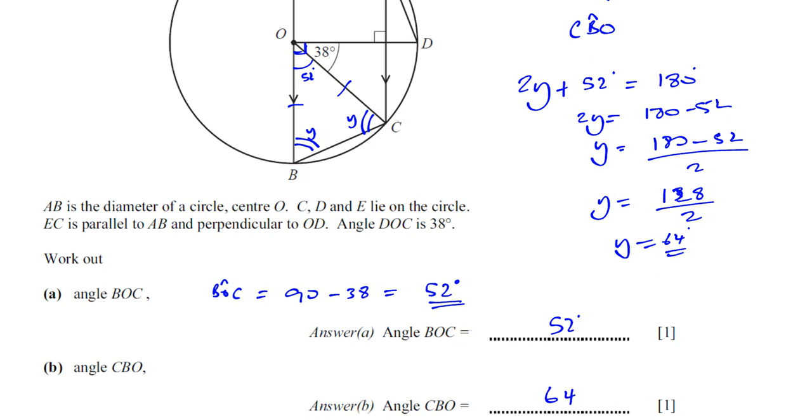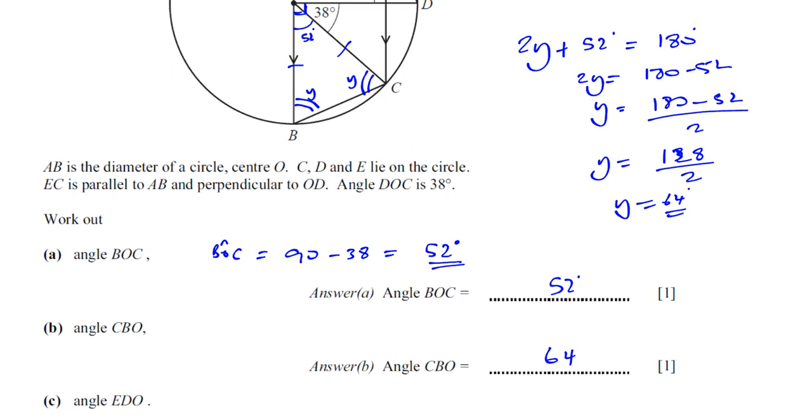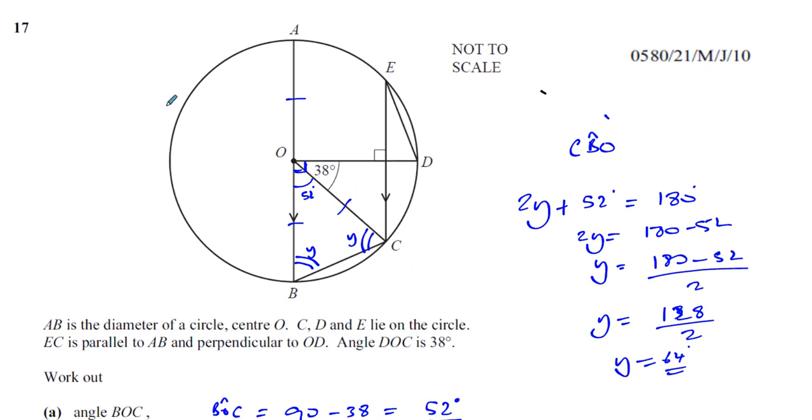And finally they're asking us to find the angle EDO. Now angle EDO is the angle over here. Now this angle can be found in a few different ways. What most people or some people will mistake is they say, oh, this angle and this angle are the same. But they're not because they're not standing on the same arc. This is not an arc. An arc is two points on the circumference.